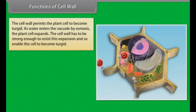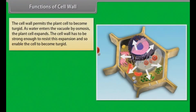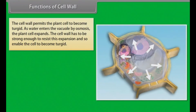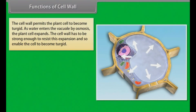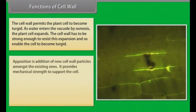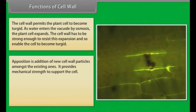The cell wall permits the plant cell to become turgid as water enters the vacuole by osmosis. The plant cell expands, and the cell wall has to be strong enough to resist this expansion, and so enable the cell to become turgid. Apposition is the addition of new cell wall particles amongst the existing ones; it provides mechanical strength to support the cell.